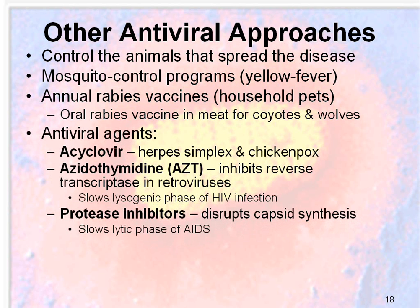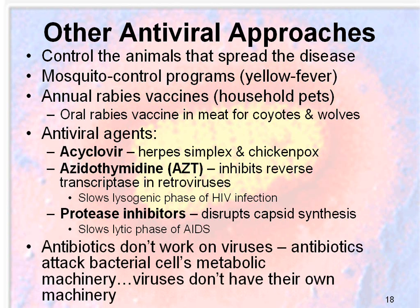Some antiviral agents of interest: aciclovir is a herpes simplex and chickenpox agent. AZT inhibits reverse transcriptase and retrovirus, slowing down the lysogenic phase of an HIV infection. Protease inhibitors disrupt capsid synthesis and slow the lytic phase of AIDS. Antibiotics don't work on viruses because antibiotics attack a bacterial cell's metabolic machinery — viruses don't have their own machinery, so it won't work on them.